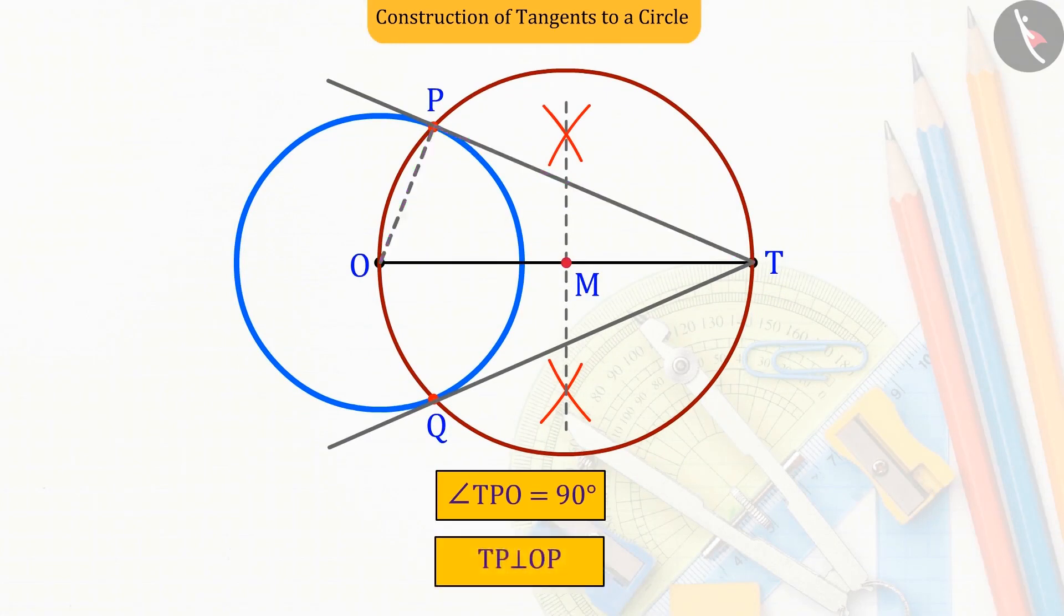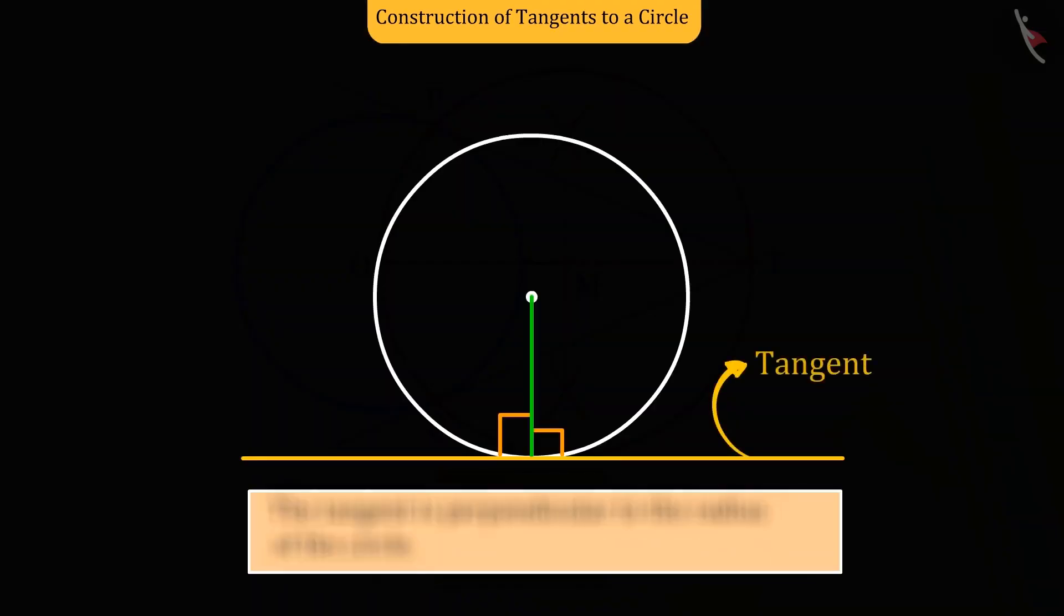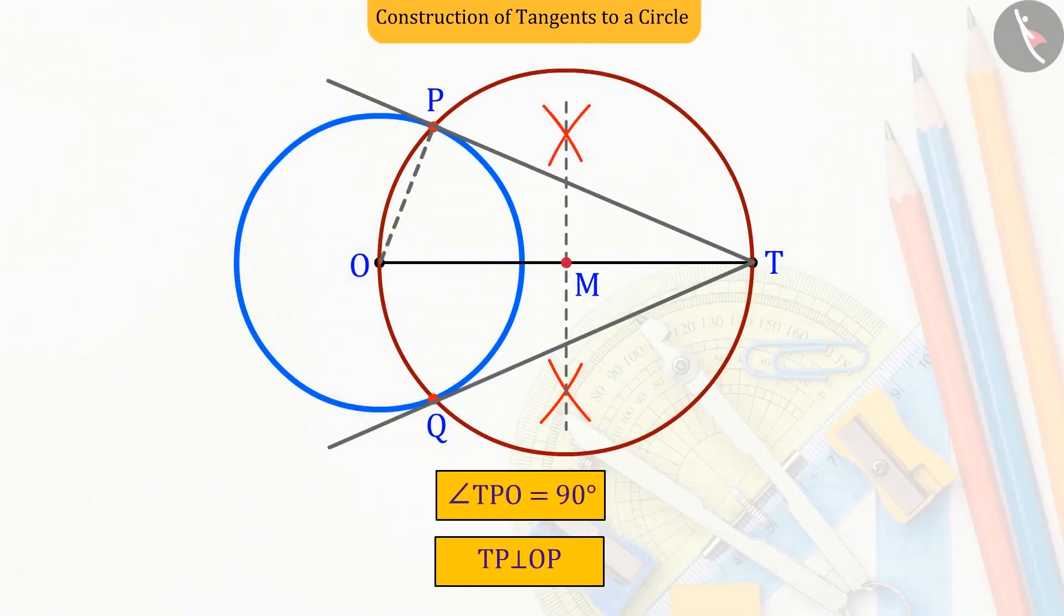So now, can we say that TP is perpendicular to OP? Absolutely correct. These two are perpendicular to each other. And as we learned in the previous lesson, the tangent line is perpendicular to the radius of the circle. So we can say that TP will be the tangent line of the circle. So can we also say that TQ is also the tangent line of a circle? Using what we learned today, you can find the answer to this question yourself.